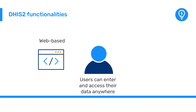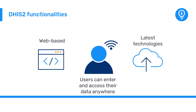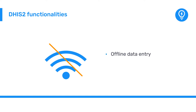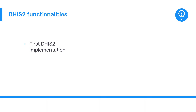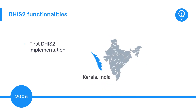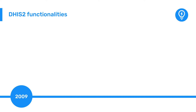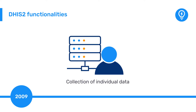As DHIS-2 is web-based, users can enter and access their data anywhere with internet connectivity. This model is still being expanded upon today, as DHIS-2 incorporates the latest web-based technologies to improve performance and increase functionality. This includes offline data entry for areas with internet connectivity challenges, and the incorporation of a mobile application for Android devices. The first implementation of the web-based DHIS-2 software was launched in 2006 in Kerala, India. In 2009, DHIS-2 added components that allowed for the collection of individual data.